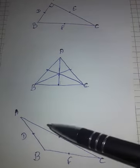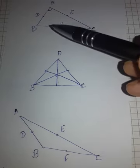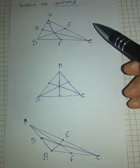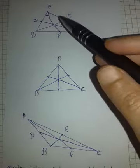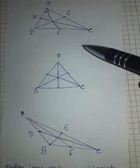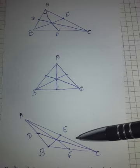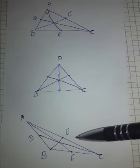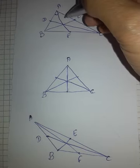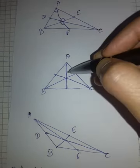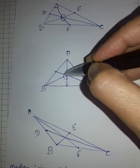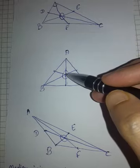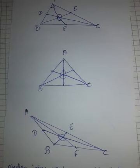I have marked the midpoints and now I am going to join the midpoint of any side to the opposite vertex. In all three triangles — acute, right, and obtuse — these medians are intersecting at one single point. This particular point is known as the centroid.